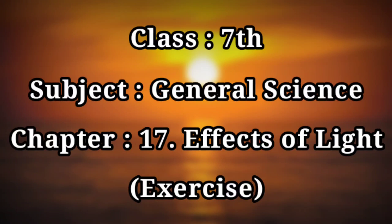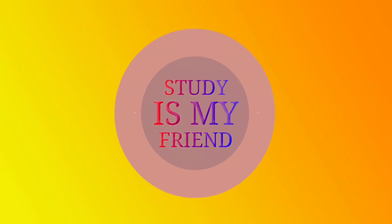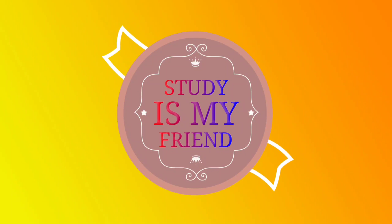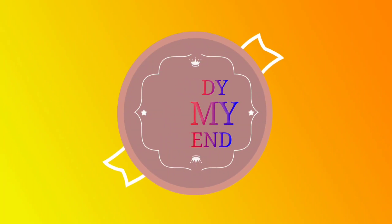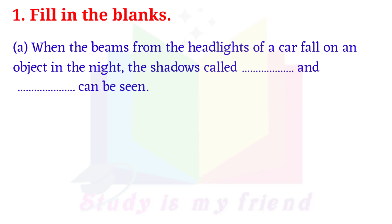Class 7th, Subject General Science, Chapter 17: Effects of Light — Exercise. Fill in the Blanks. A. When the beams from the headlights of a car fall on an object in the night, the shadows called umbra and penumbra can be seen.